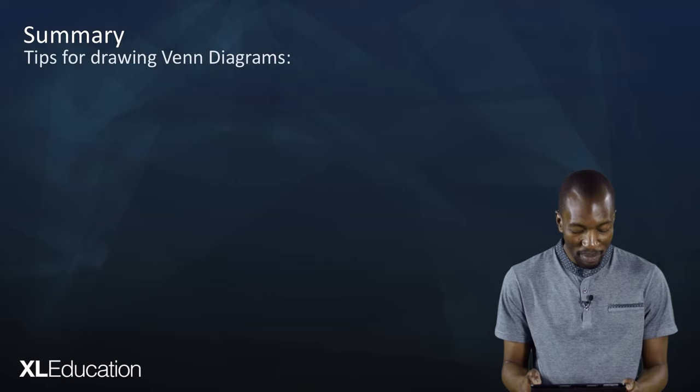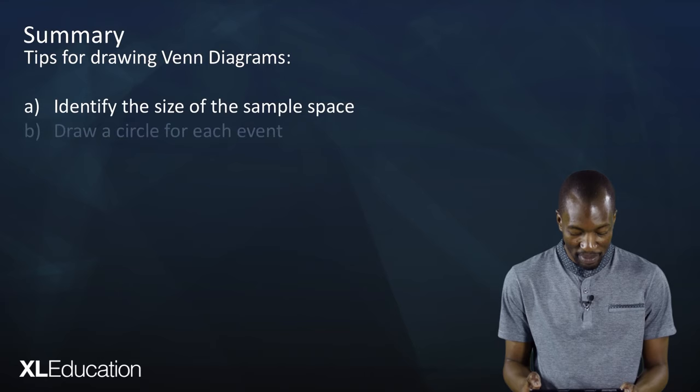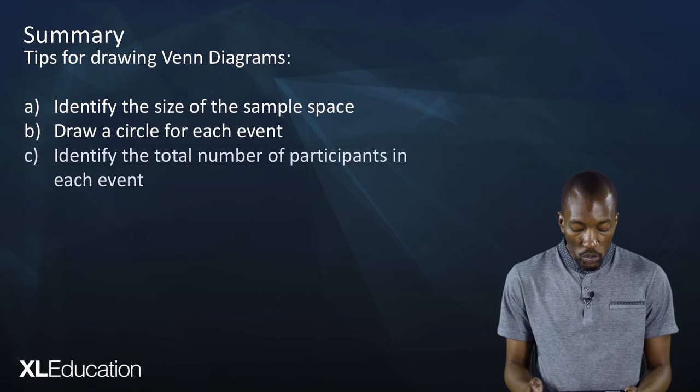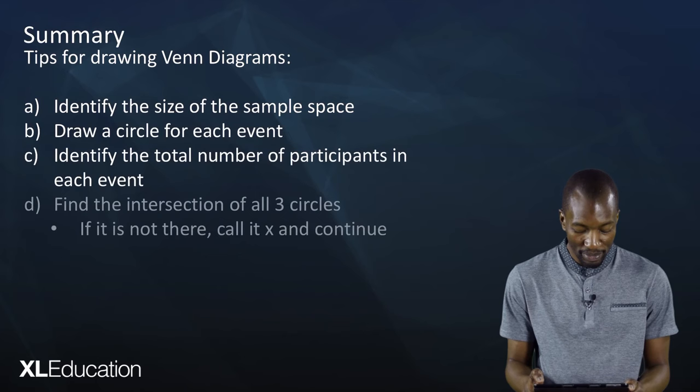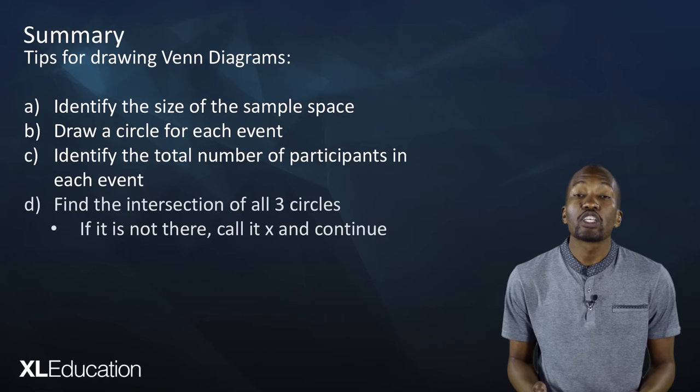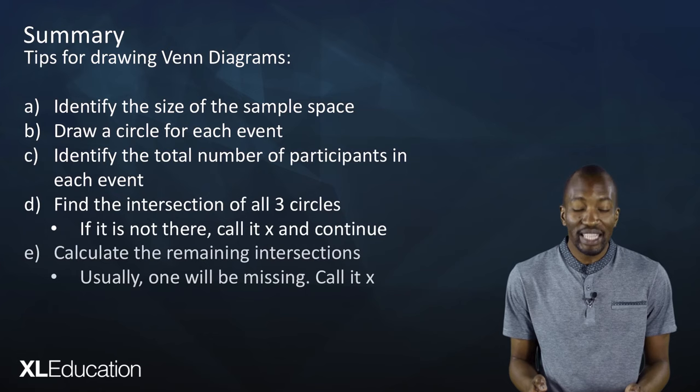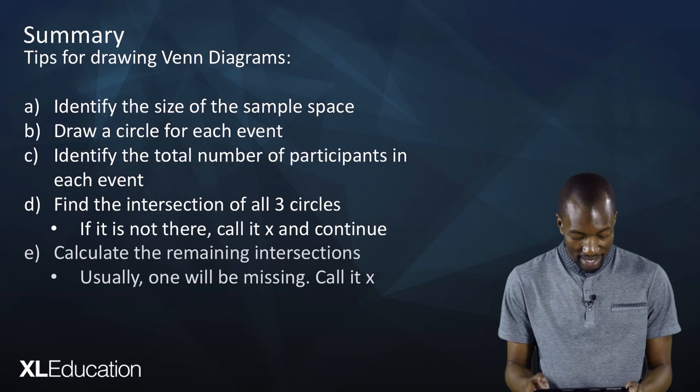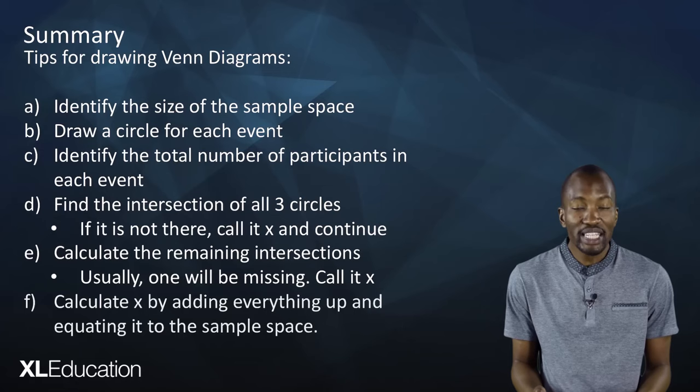In summary, here are the tips for drawing Venn diagrams: first, identify the size of the sample space; draw a circle for each event; identify the total number of participants in each event; find the intersection of all three circles — if it's not given, call it x and continue; calculate the remaining intersections, calling any missing one x; then calculate x by adding everything up and equating it to the sample space. The more you practice, the higher the probability of getting something right — so get practicing!